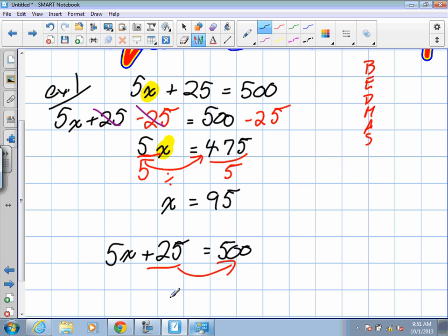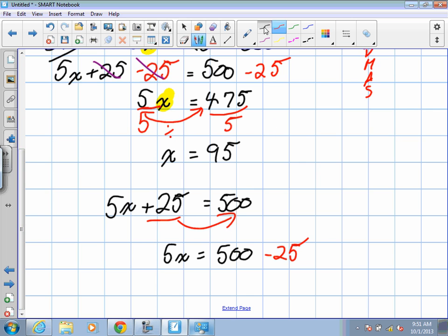So when it goes to the other side, we have 5x equals 500 subtract 25, which gives us 5x equals 475.